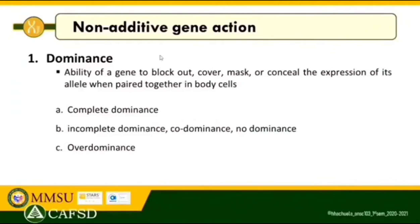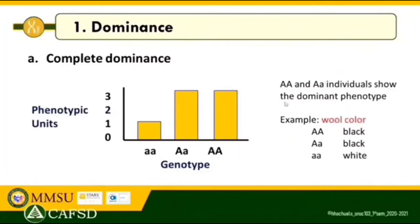Dominance can be complete, incomplete, co-dominance, no dominance, or over-dominance. For complete dominance, the homozygous dominant and heterozygous individuals show the dominant phenotype — there is no effect when the recessive gene in the heterozygous genotype is replaced by a dominant gene. In this model, homozygous dominant exerts the same effect as heterozygous. A common example is wool color — individuals with homozygous dominant and heterozygous genotypes exhibit black wool color, while homozygous recessive sheep exhibit white wool color.